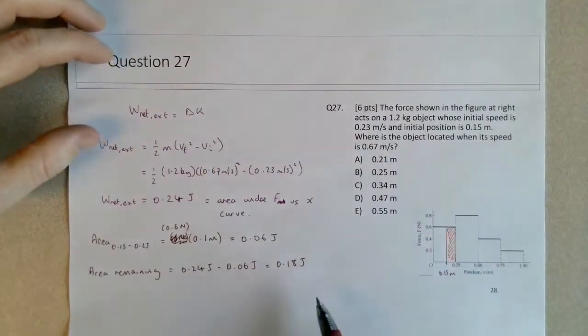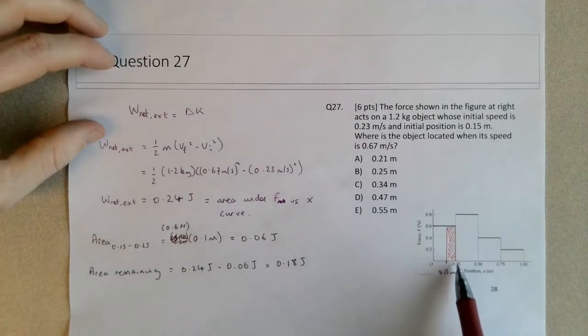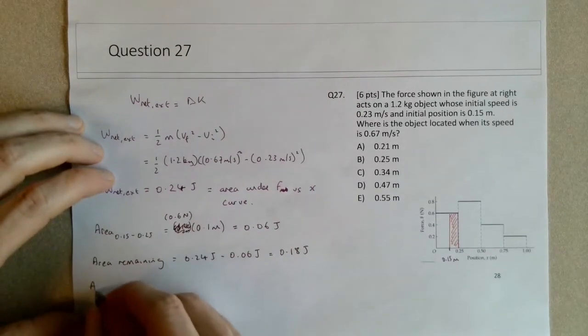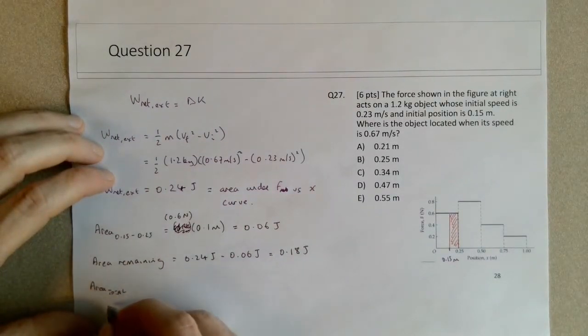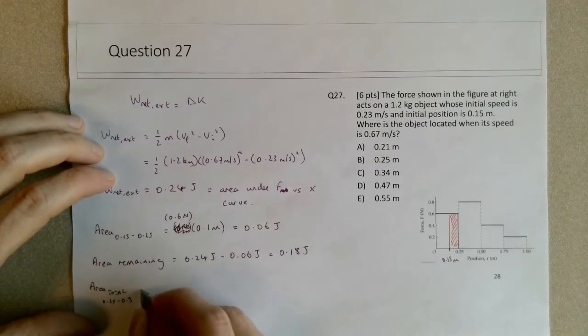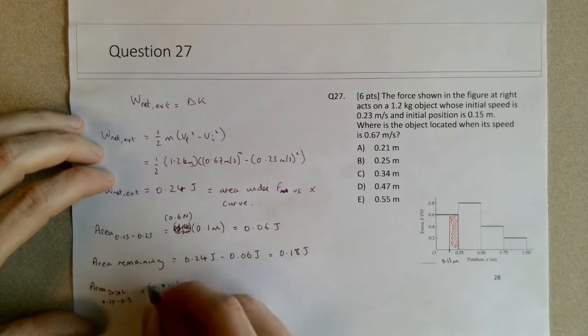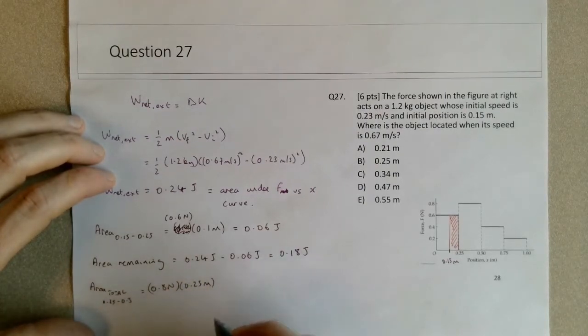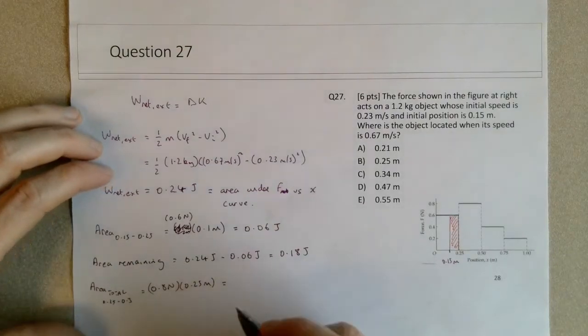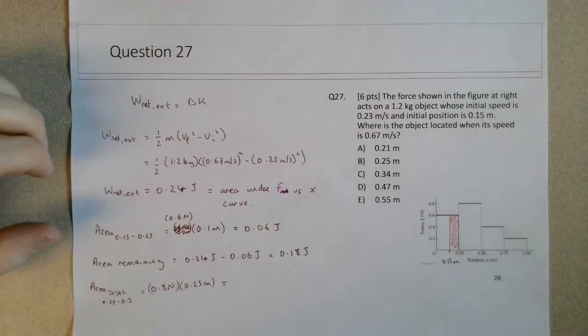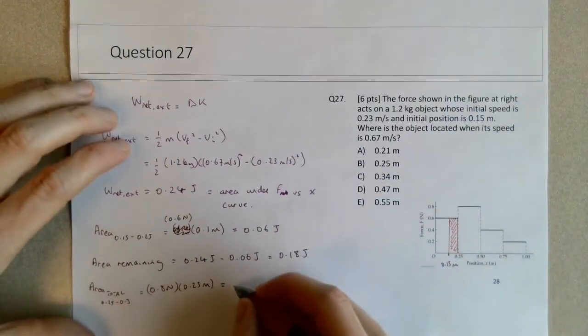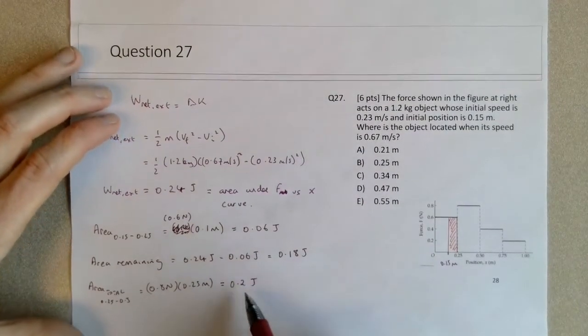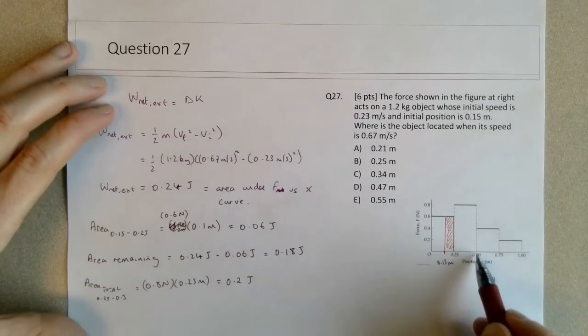We can ask ourselves, does it go beyond 0.5 meters? The total area from 0.25 to 0.5 is 0.8 newtons times 0.25 meters, which gives us 0.2 joules. We can see that's greater than the 0.18 joules remaining, so the object will come short of 0.5 meters.